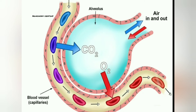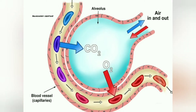In the alveolus, the concentration of oxygen is high when compared to the oxygen present in blood capillaries. That's why, by a process called diffusion, oxygen moves from high concentration — that means from the alveolus — to low concentration — that means into the blood capillaries.